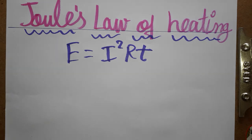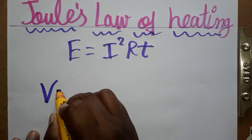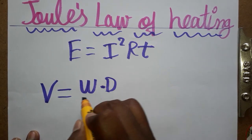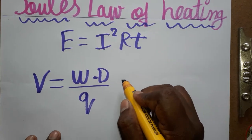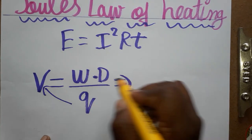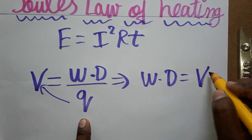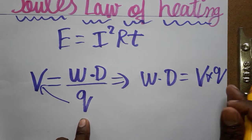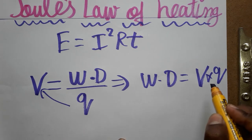First of all, voltage. Voltage is equal to work done by charge — that is the definition of voltage. So now, work done is equal to voltage into charge.